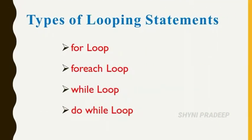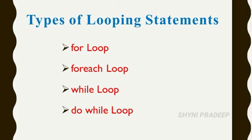Loops are implemented using the following categories: for loop, for each loop, while loop, and do while loop. In these loops, one condition will be given. If that condition is true, you have to execute the block of statements. If the condition is false, you do not need to execute that block of statements — you exit from the loop.